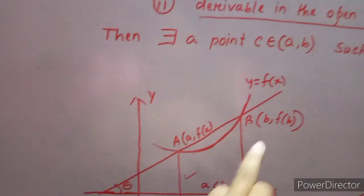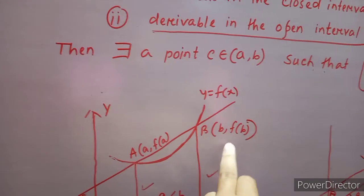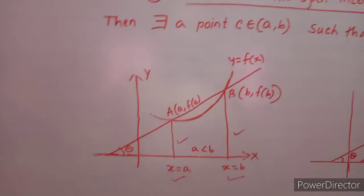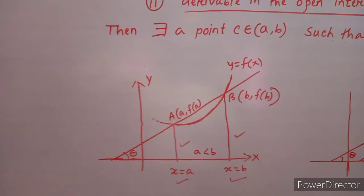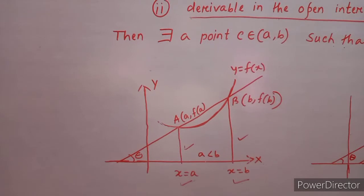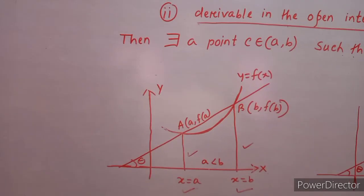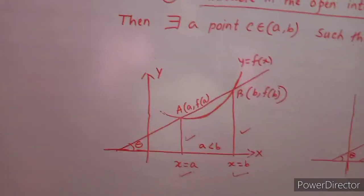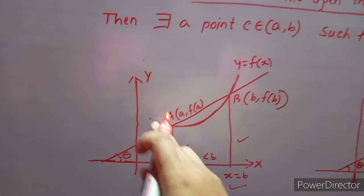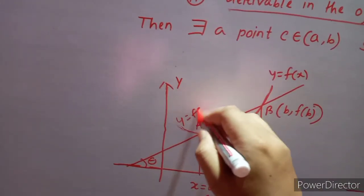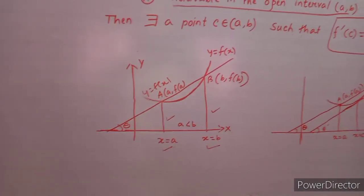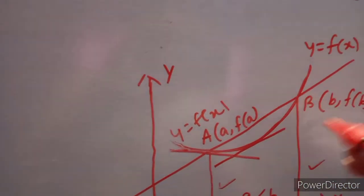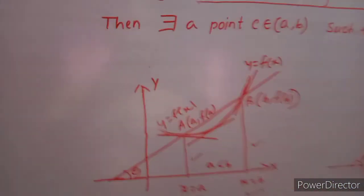The coordinates of point a are (a, f(a)) and the coordinates of point b are (b, f(b)). From the concept of derivability — the geometrical interpretation of dy/dx — we get the slope of the tangents. Since the function is derivable between a and b, we can draw many tangents on the curve y equals f(x), as shown in different directions.